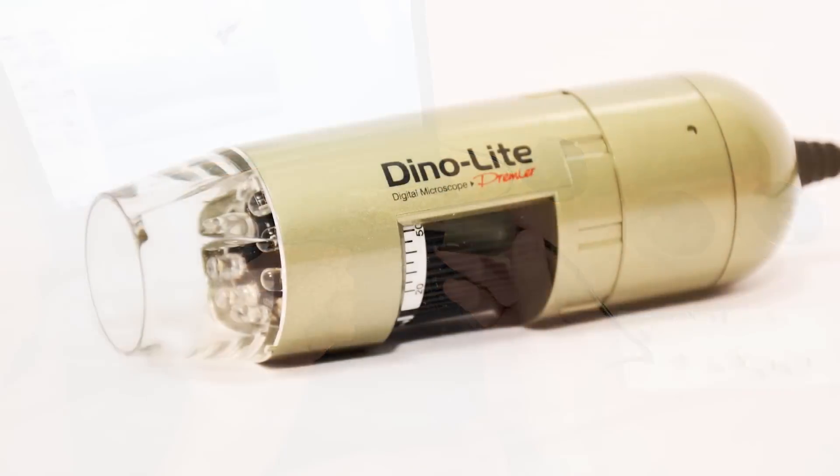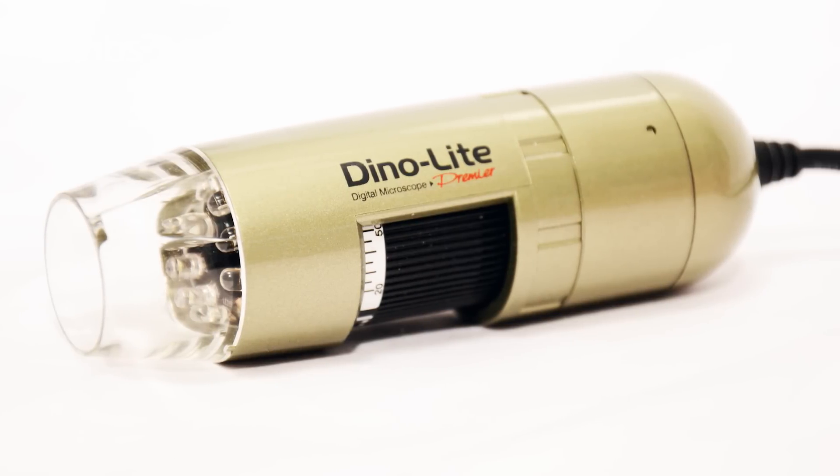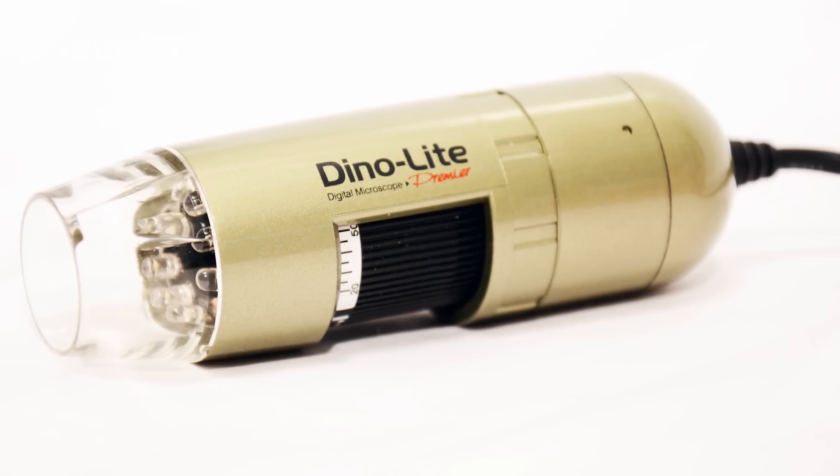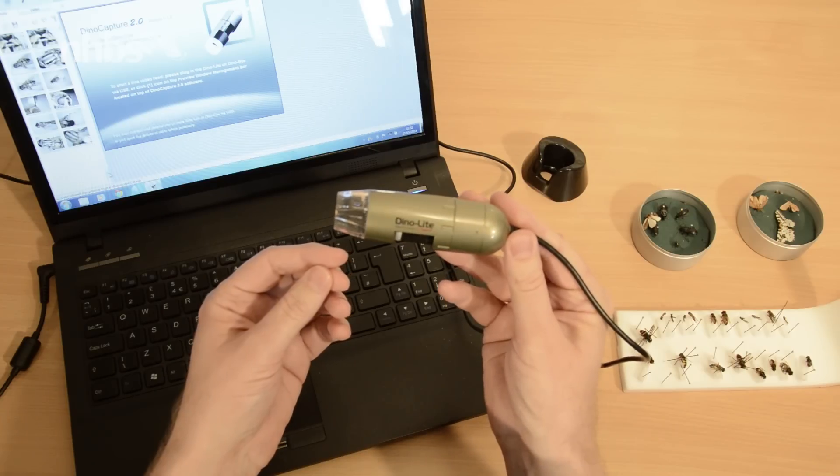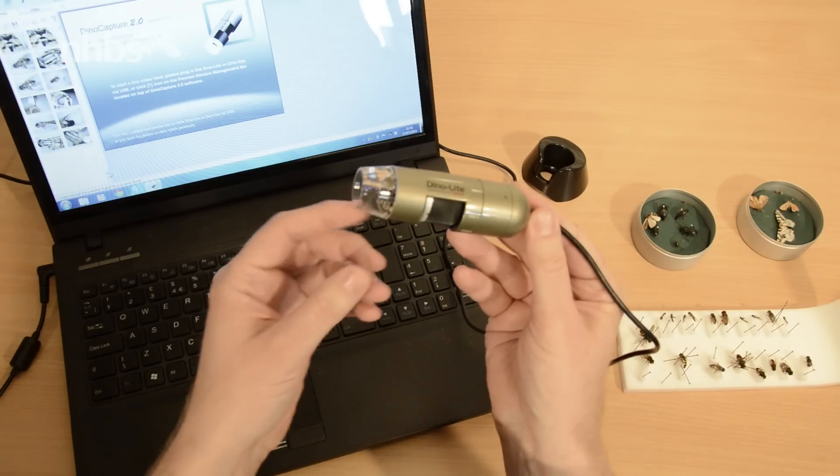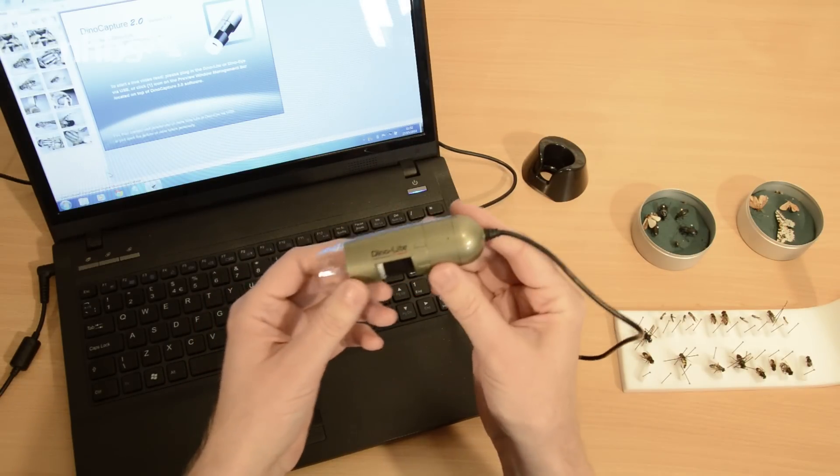This model is the AM4113T. With a 1.3 megapixel image sensor it can produce high resolution images and record HD video up to 30 frames per second, and you can even set it to do time-lapse photography.